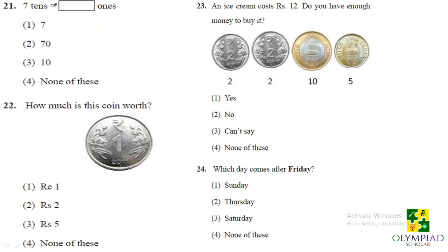So question number 21. So it is asking 7 tenths equals to blank ones. See we know 7 tenths equals to 70 and 70 if we will say it as it is. So it will be 70 ones that means if I will give you 7 tenths that means 70 rupees and I will tell you to convert this amount of rupees to number of 1 rupees then definitely you will get 70 one rupee coins. So that means option 2 70 ones is the correct answer.